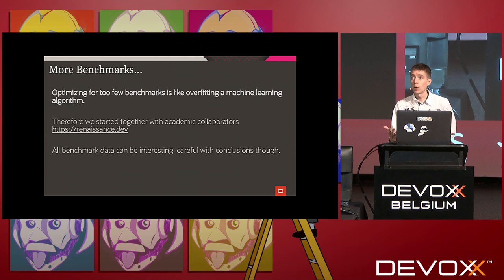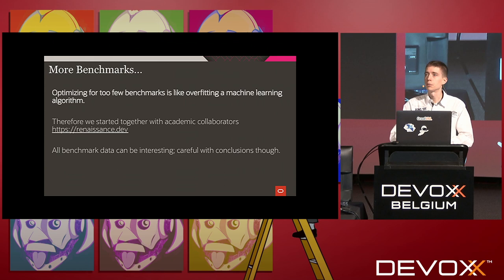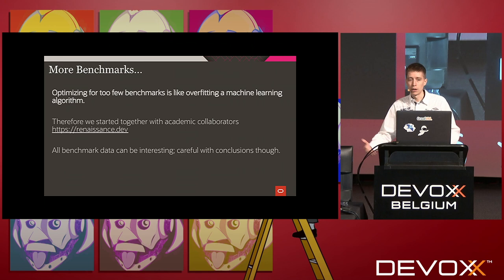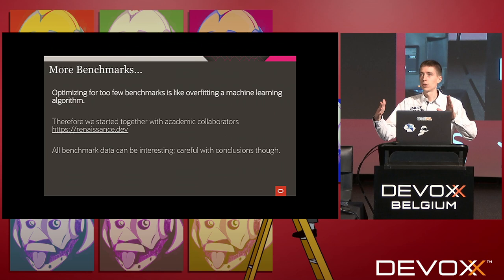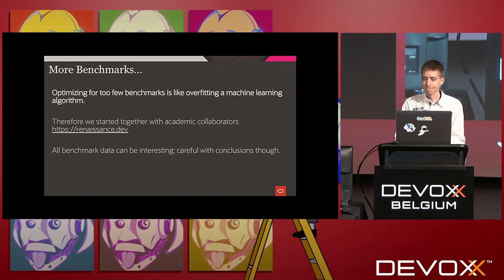We want to see more benchmarks and are interested in your own workload numbers, because optimizing for too few benchmarks is like overfitting a machine learning algorithm — the compiler performs well on known benchmarks but may fall apart on different programs. In the GraalVM team we run hundreds of different benchmarks and check that any optimization shows no regression on most while providing substantial gains on others. We have a benchmark suite at source.dev where we try to collect more industry benchmarks.